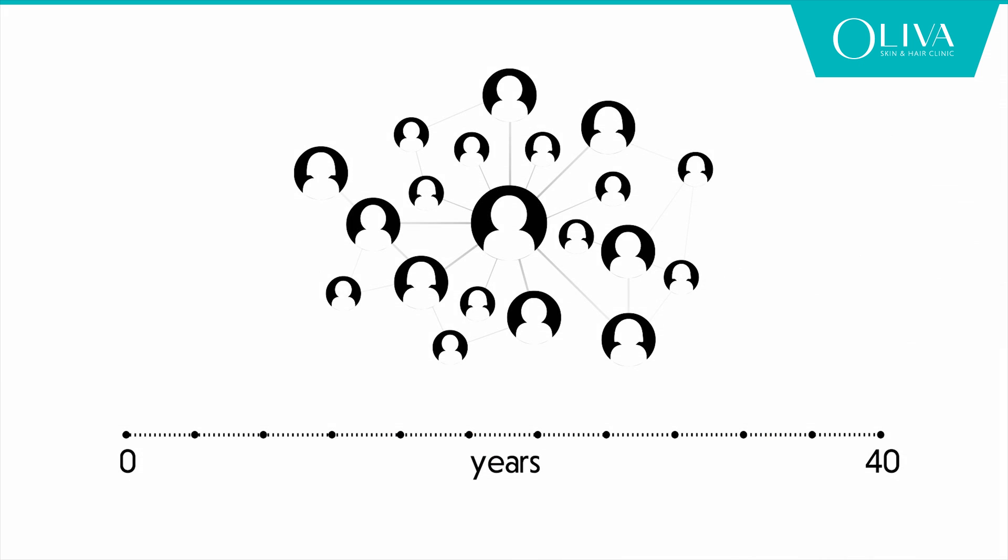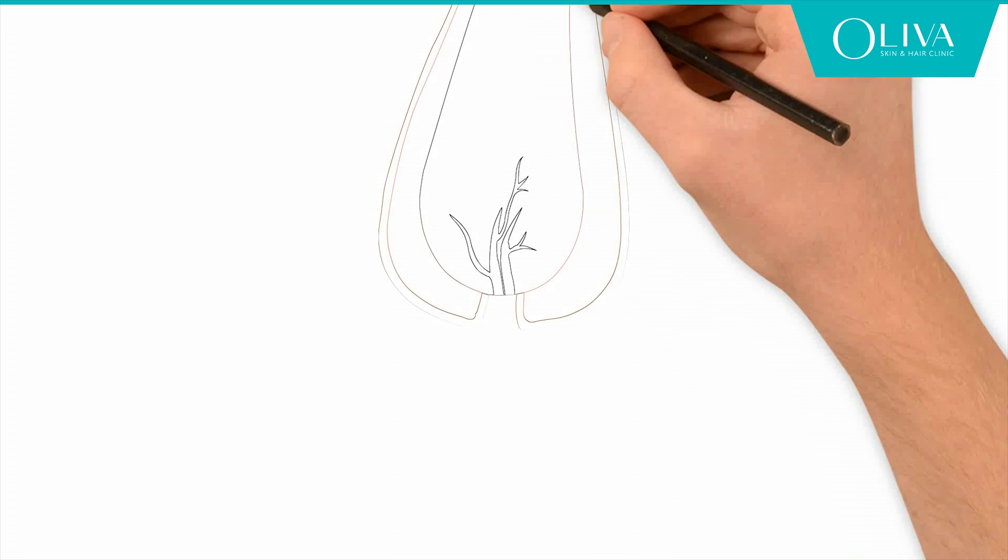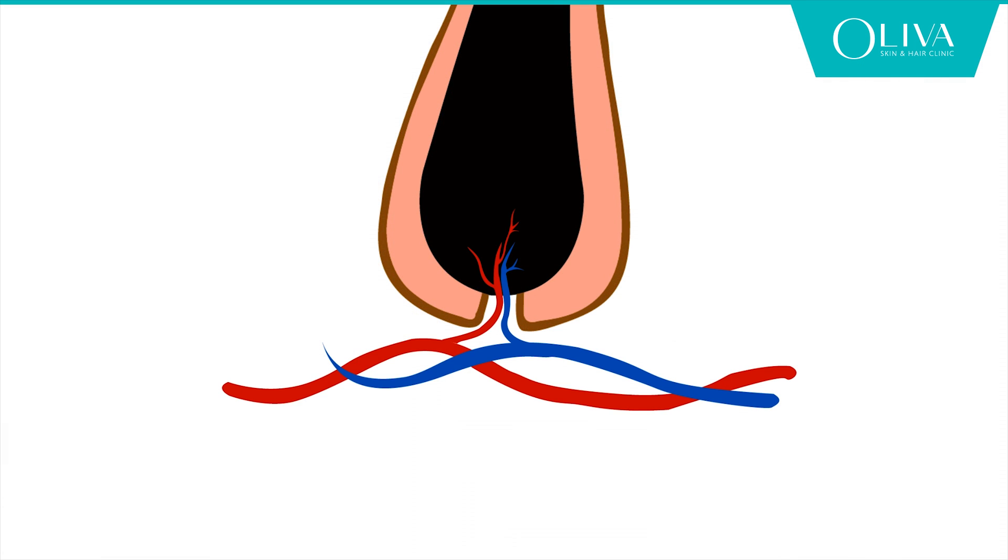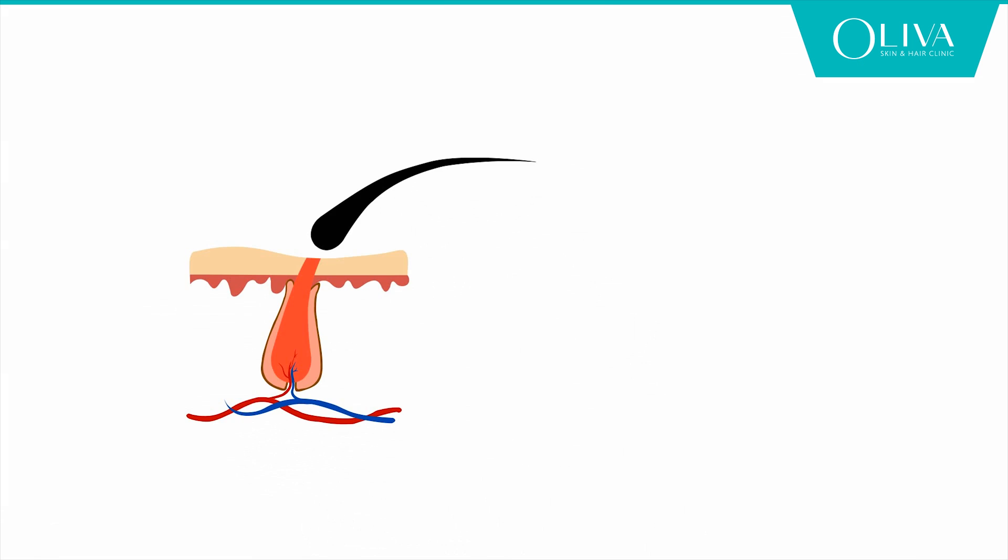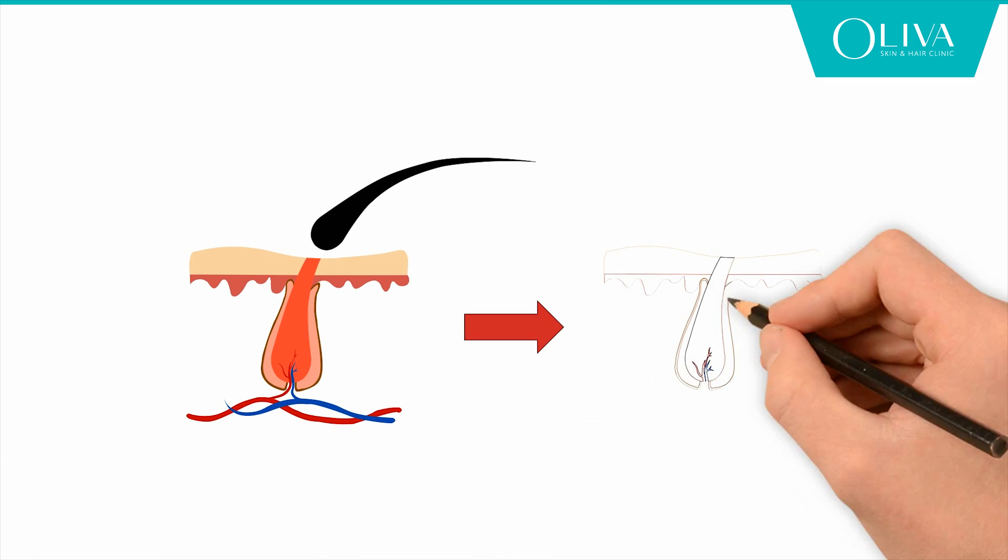of patients in getting back their lost hair. It is postulated that minoxidil works by widening the blood vessels, which allows more oxygen, blood, and nutrients to the follicles. This causes hair in telogen phase to shed and get replaced